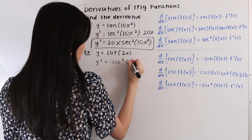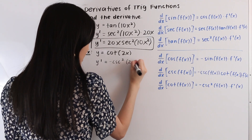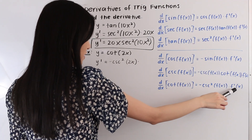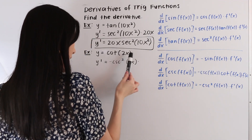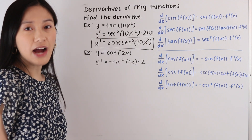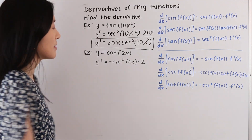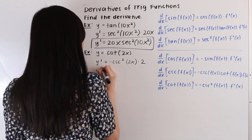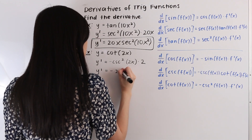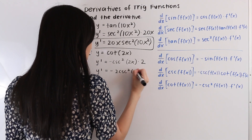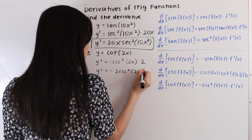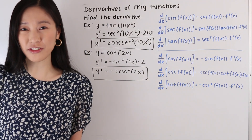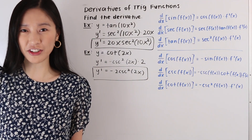And so we're going to keep the angle the same. So this angle here is 2x. And then we need to multiply by the derivative of our angle. So the derivative of 2x is equal to 2. And as our last step, let's go ahead and move this 2 out in front. So we end up with y prime is equal to negative 2 cosecant squared of 2x. And so that is how you take the derivative of a trigonometric function.